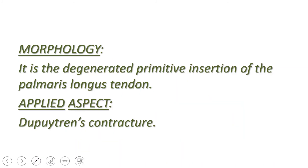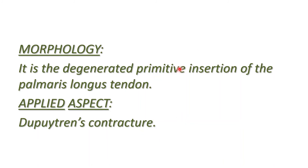Regarding the morphological importance of the palmar aponeurosis: the palmar aponeurosis is nothing but the degenerated primitive insertion of the palmaris longus tendon. So the palmaris longus tendon in the palm is represented in the form of the palmar aponeurosis.